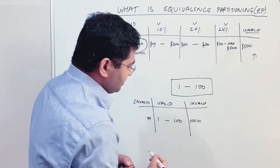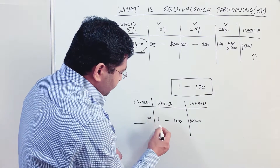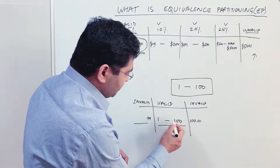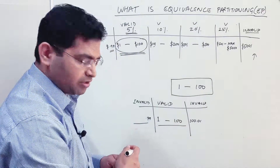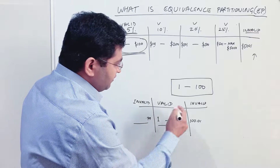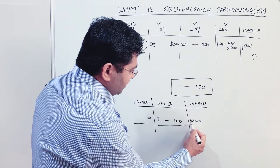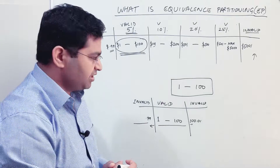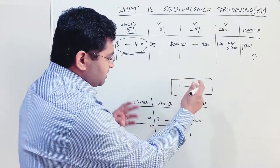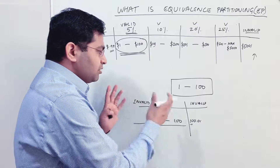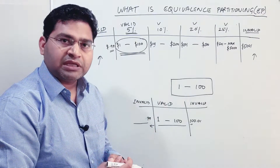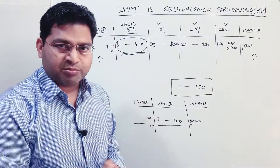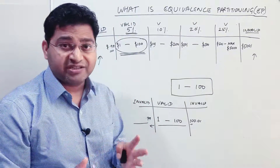Anything above 100 — for example 100.01 if it were a decimal value — should also be considered an invalid partition. So in this case we have three partitions: one valid partition accepting values from 1 to 100, one invalid partition for anything above 100, and one invalid partition for anything less than 1. This is how you can explain it clearly to the interviewer, demonstrating that you know these concepts.